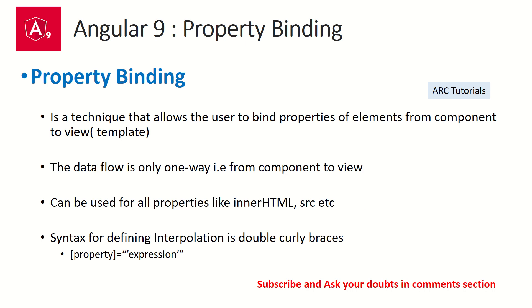In today's episode, the focus is on property binding. Property binding is a technique through which we can bind various properties of DOM HTML elements via the component. We provide values from the component and bind them in the template. Just like interpolation, property binding is a one-way data binding — data flows only in one direction from component to template. We can use any HTML property; there is no restriction. The syntax uses square brackets: [property]="expression".